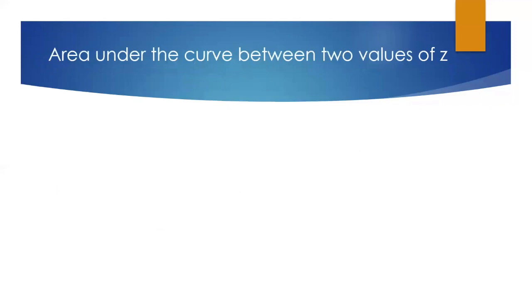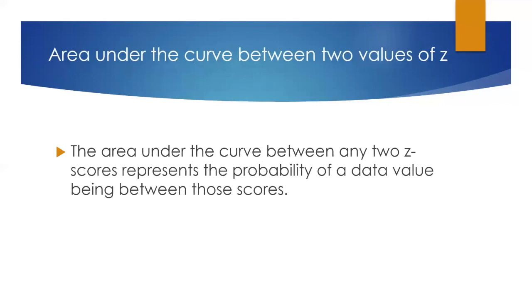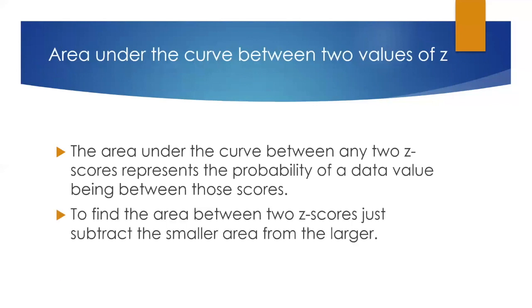Now what about finding the area under the curve between two values of z? For that, we subtract the smaller area from the larger. This represents the probability that a data value is between those scores.